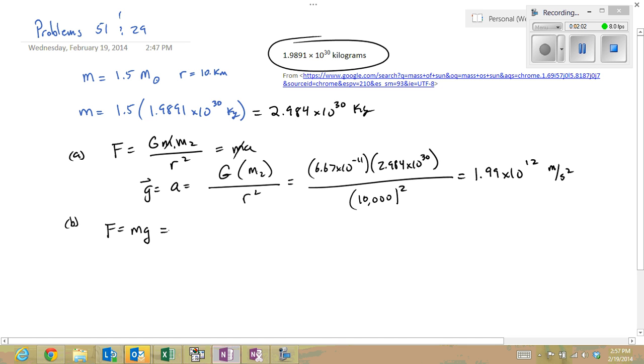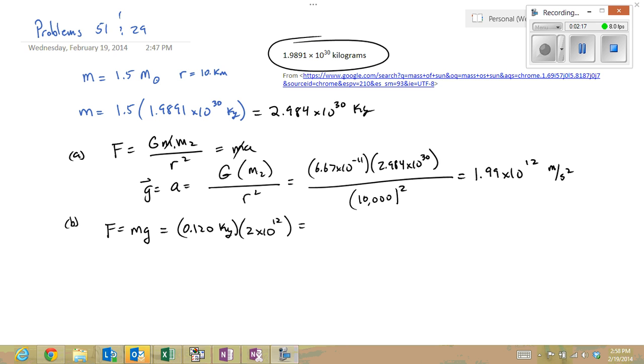We know weight is equal to mg, so the effective g of that star is equal to its acceleration. So this would be the weight of an object that is a baseball. So 0.120 kilograms times this acceleration, 2 times 10 to the 12th, is going to equal 2.4 times 10 to the 11th newtons. So that baseball weighs quite a bit when it's on the surface of that star.